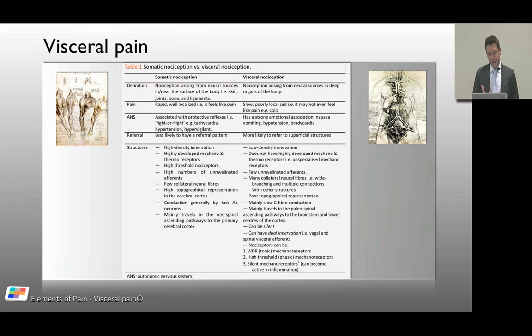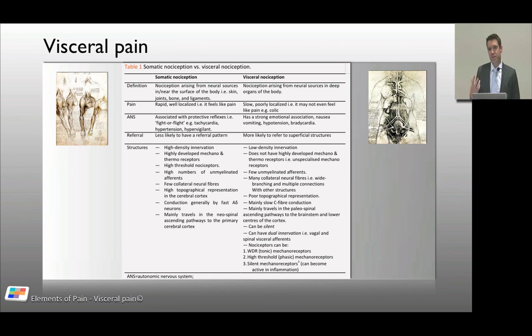Somatic pain has high topographic representation on the cerebral cortex — think about the hands, feet, and head, the cerebral homunculus. Visceral pain is not highly represented on the cerebral cortex. Somatic pain is fast, well-localized, real pain as we know it, mediated by A-delta fibers. Visceral pain is more C-fiber mediated — slow, dull, and slightly delayed.